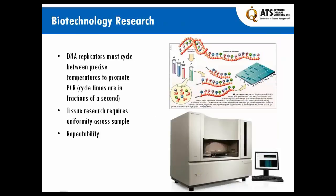Next is biotech research. The major example in this field is the DNA replicators, because they really have a tight requirement when it comes to cycling the temperature of the DNA to promote PCR. What we try to do here is put in as many cycles between the upper and lower temperature limits per second as possible. This helps to replicate the DNA quicker, which reduces the actual cost of operating the unit. Repeatability and accuracy in this type of instrument is very important to maintain the accuracy of your samples and analysis from day to day.